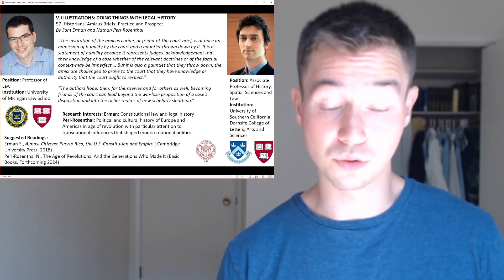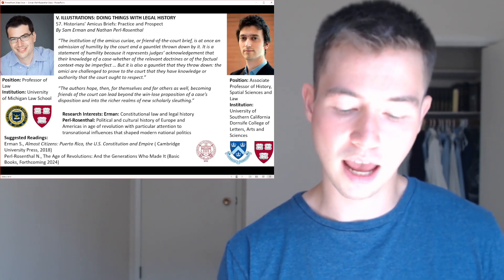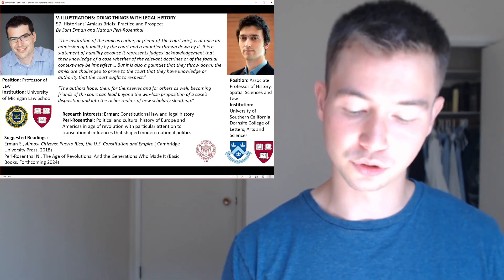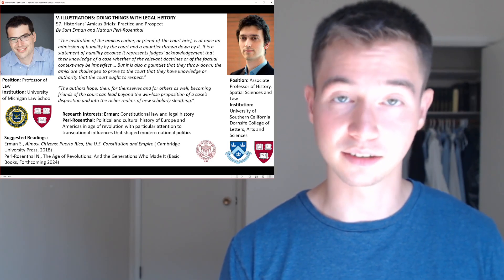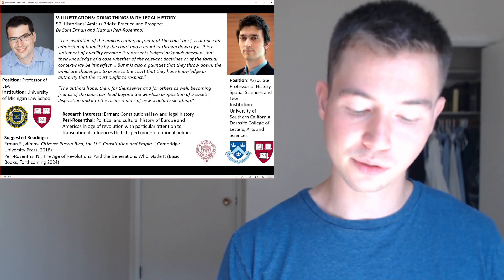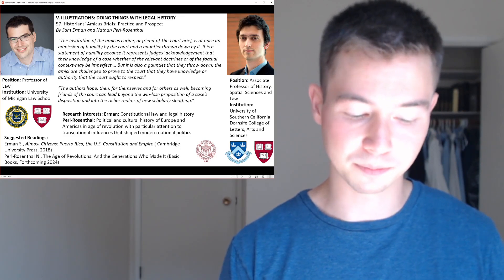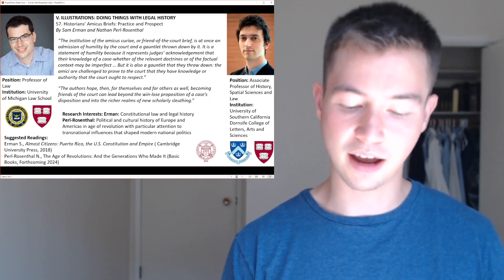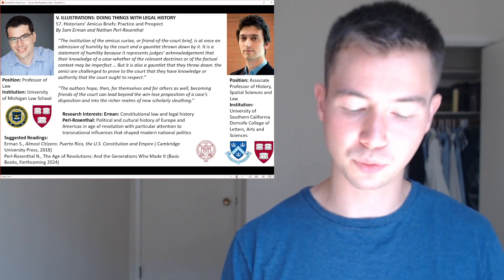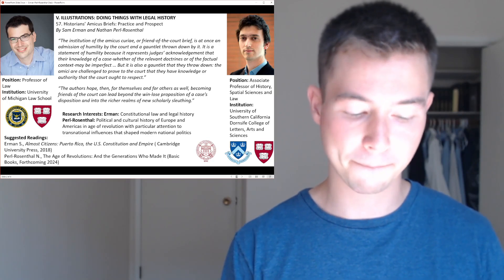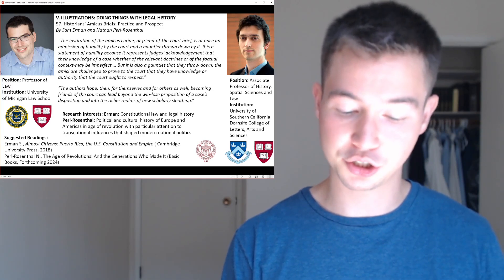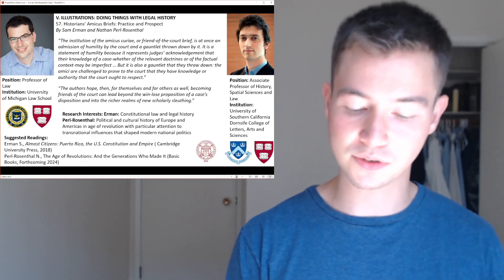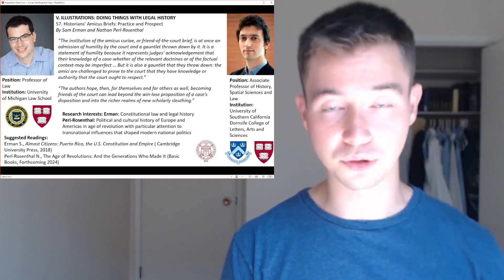Fulfilling this role will often require historians to speak a language legible to courts on matters of concern to them, while respecting the court's distinct areas of authority. One set of strategies that historians would do well to adopt in writing amicus briefs is to focus on respecting the disciplinary divide between historians and judges. Historians will do well to stop short of purporting to decide legal questions — judges often understand their roles to include, at a minimum, the final disposition of the case, for if a historical account wholly decides the dispute, the division of labor between judge and historian has ceased to exist.